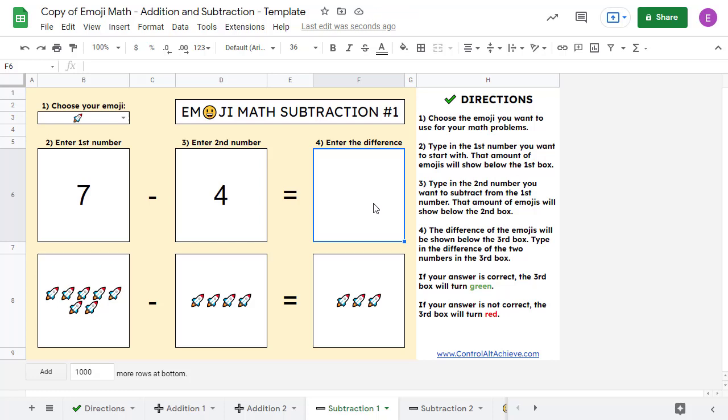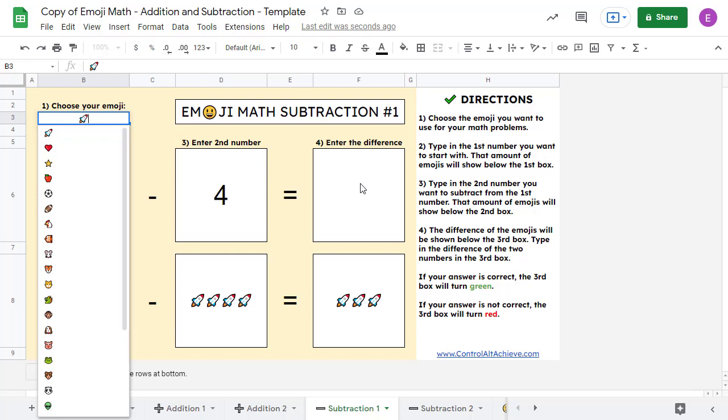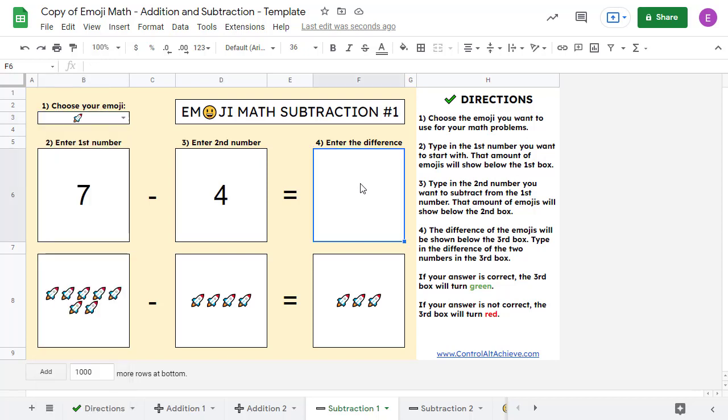To help with this, I have created a Google Sheets template that lets students choose the emoji they want to work with and then practice addition and subtraction problems while at the same time getting conditional formatting feedback to let them know if they got the answer correct or not. In this video, we'll take a look at how to get your own copy of this template and how to use it with your students.